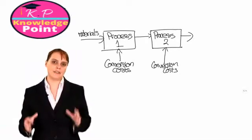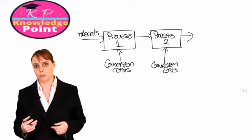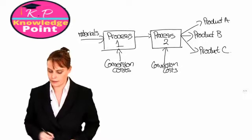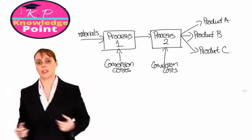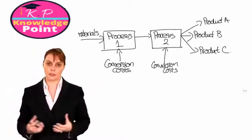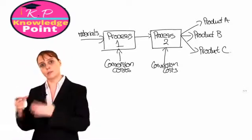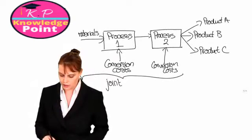In many manufacturing environments like an oil refinery, our output might be a number of different products — we won't just be producing a single product. So perhaps our output at the end of our two processes will be product A, product B, and product C. The split-off point in our process is the point where we divide our output into our three separately identifiable products. If our output is more than one different product, then the costs incurred up to split-off point are called our joint costs.